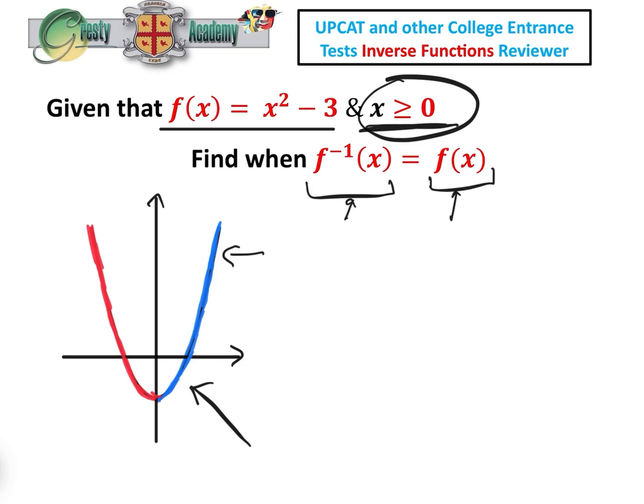then we would not be able to get an inverse, because if we apply the horizontal test here, there would be two solutions if we have both edges of both curves, whereas if we restrict it to x greater than 0, there's only 1, and therefore we can have a 1-to-1 mapping and an inverse.